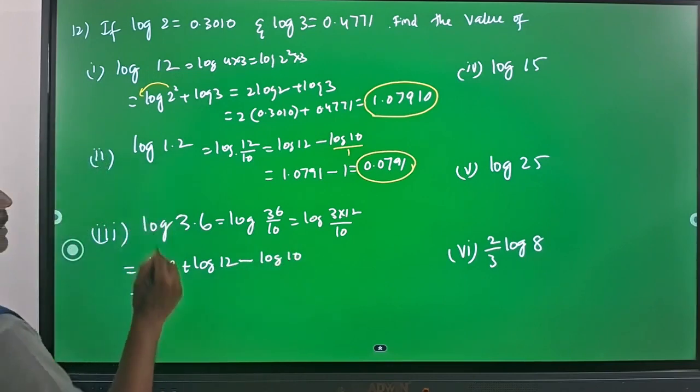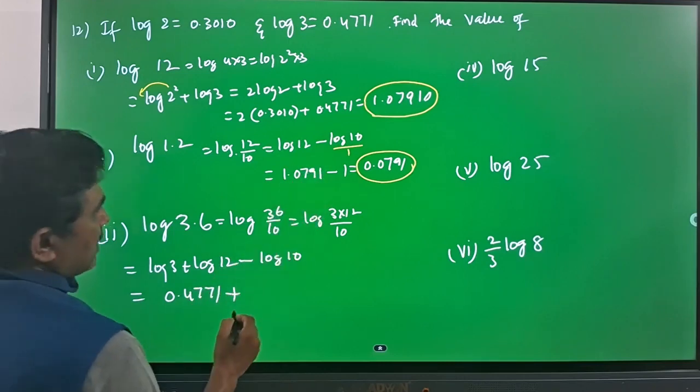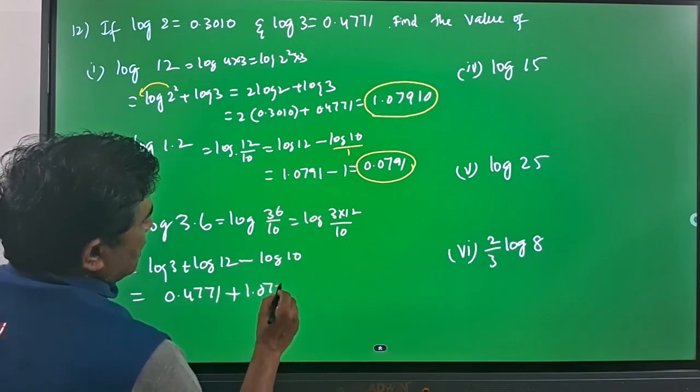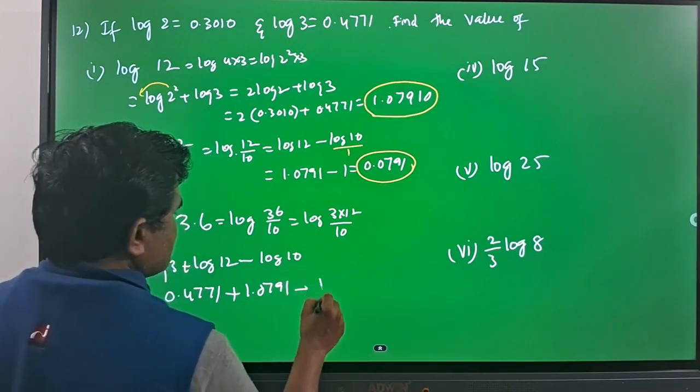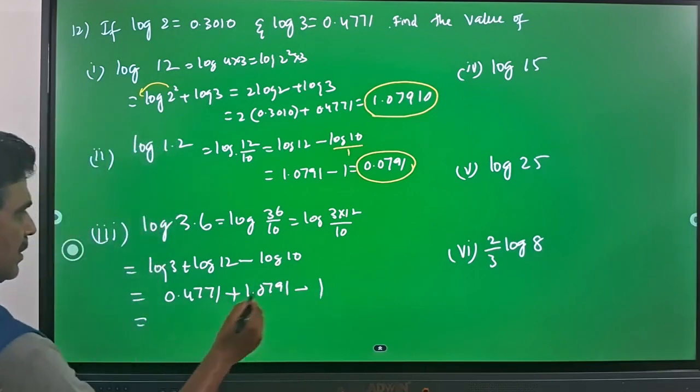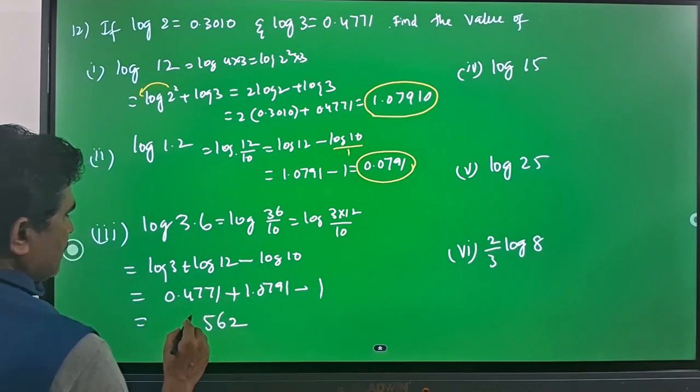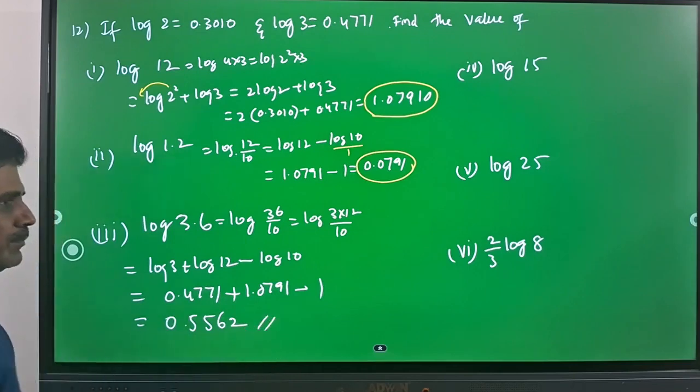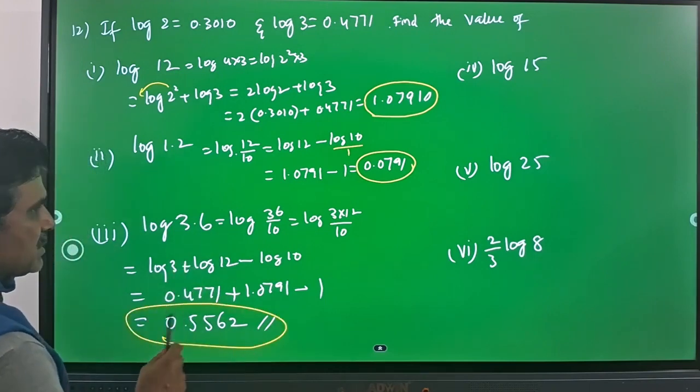Which in turn, log 3 can be written as 0.4771 plus log 12 is 1.0791 minus log 10 is 1. So if you subtract, you will have 0.5562. This is the value. You can pause the video and check these values also. Log 3.6 is 0.5562.